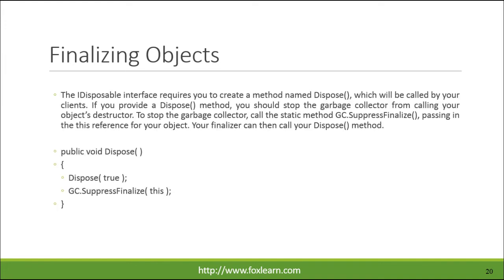The IDisposable interface requires you to create a method named dispose, which will be called by your clients. If you provide a dispose method, you should stop the garbage collector from calling your object's destructor. To stop the garbage collector, call the static method GC.SuppressFinalize, passing in the this reference for your object. Your finalizer can then call your dispose method.